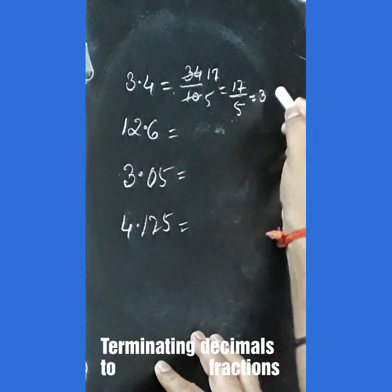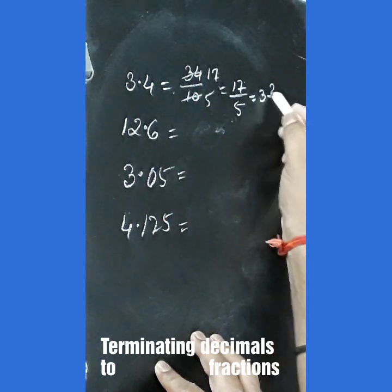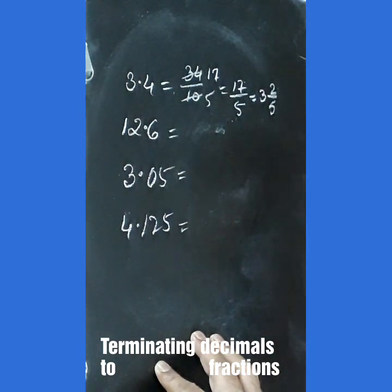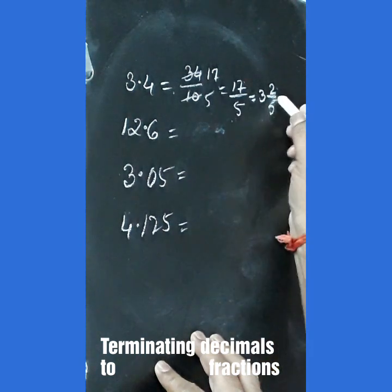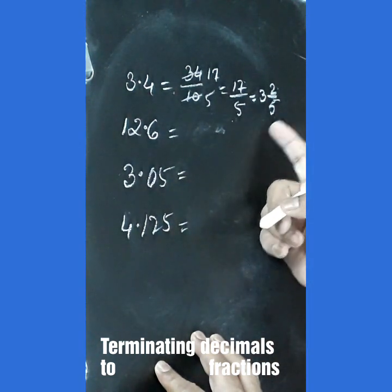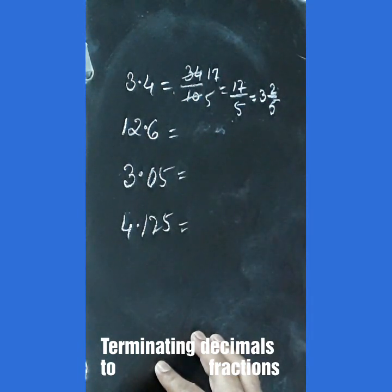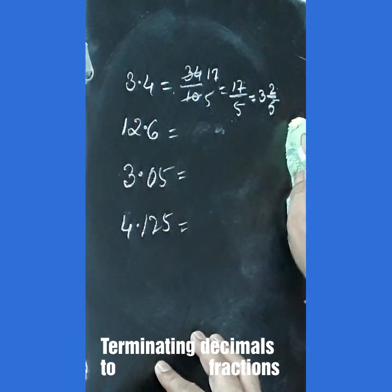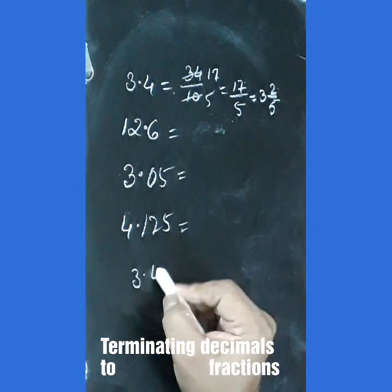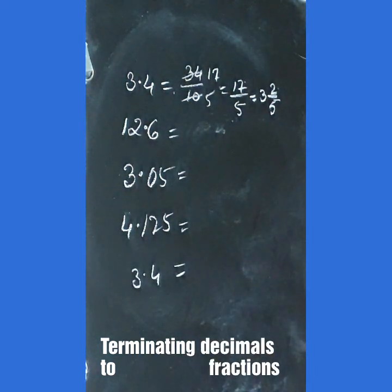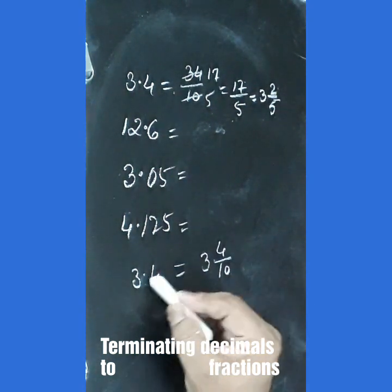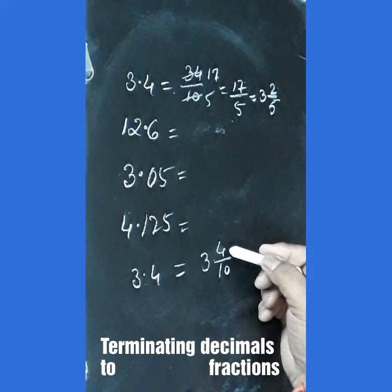5 goes into 17 three times giving 15 with remainder 2, so 17 upon 5 equals 3 and 2 over 5. We can also write 3.4 directly as 3 and 4 over 10, since there is 1 digit after the decimal, which simplifies to 3 and 2 over 5.